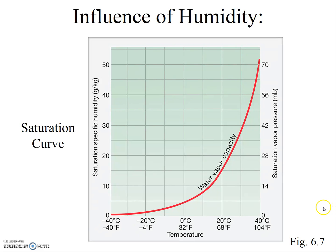Looking at the graph one more time: as air temperature goes up, the water vapor capacity goes up as well, and as temperature decreases, the water vapor capacity decreases — notice that direct relationship. For our purposes, we can simply consider that warmer air can hold more water than cooler air. This is going to be very important later, as we'll see that as air rises, expands, and cools, water will start to condense — because the cool air can't hold all that water. It becomes oversaturated, and water condenses and forms clouds. More on that later.